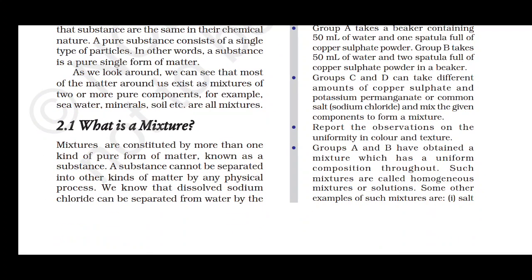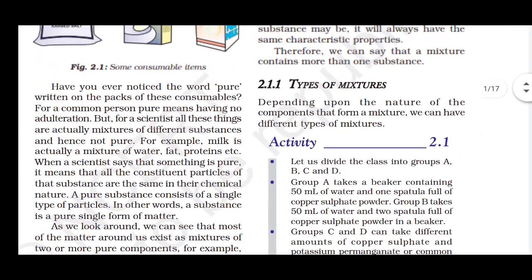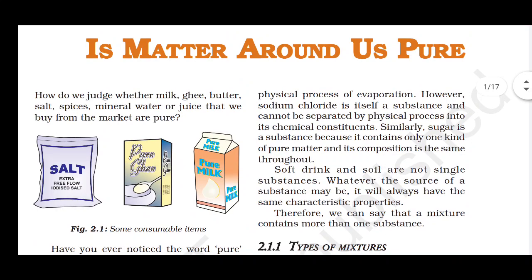Pure substances have a fixed composition, whereas mixtures do not have a fixed composition. Mixtures are substances which have more than one kind of particle, meaning they are not a pure form of matter. A mixture can be separated by a physical method. For example, when we dissolve sodium chloride (NaCl) — the salt we use at home — it can be separated from water by the physical process known as evaporation.